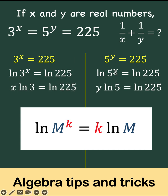The same here, the exponent y is now written at the front. So we have y ln of 5 equals ln of 225.